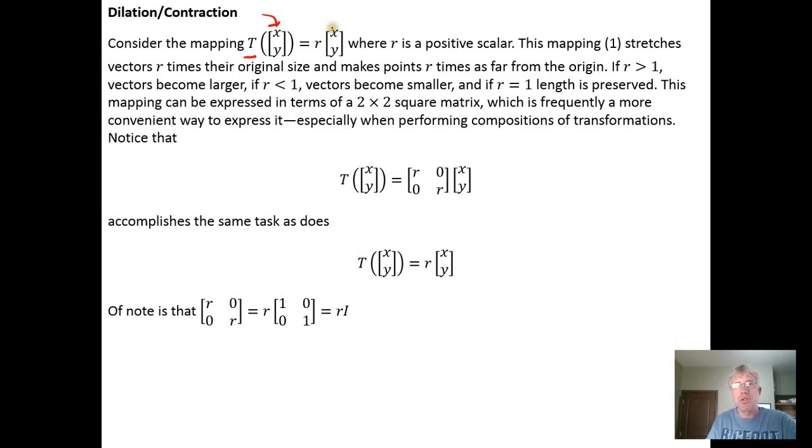I map it over to a two-component vector, so I have a map from R2 to R2, or a transformation from R2 to R2, where we take and multiply the vector input by a positive scalar.